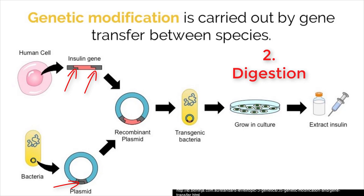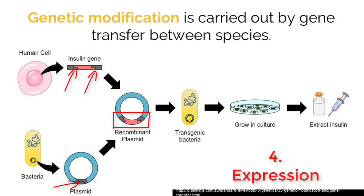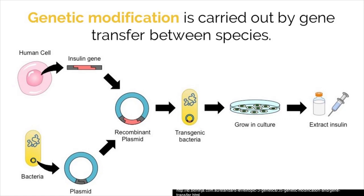This takes us to the final step where the newly formed vector carrying the gene of interest is introduced to the host cell. If all goes well, the host cell will express the desired trait. In this example, if the transformation is successful, the bacteria cell will produce insulin that scientists can extract and use to treat insulin deficits.